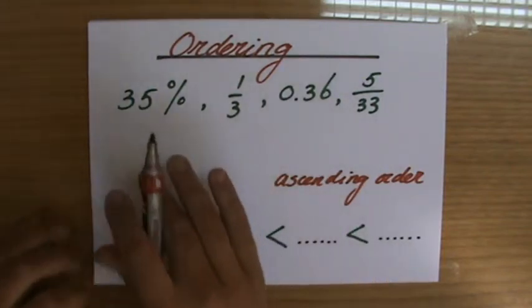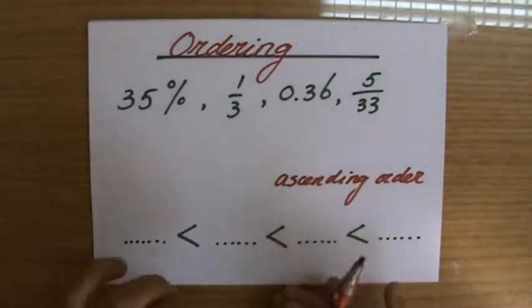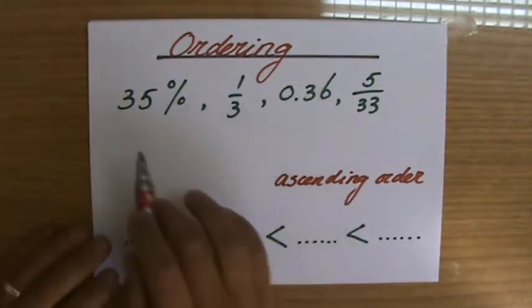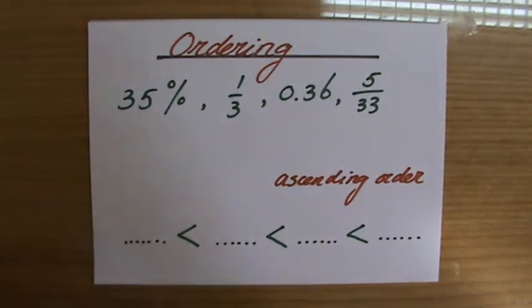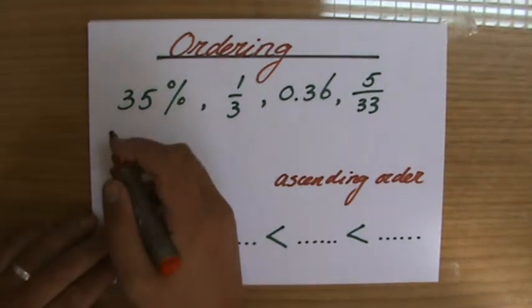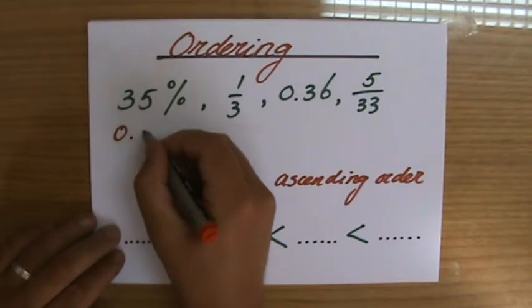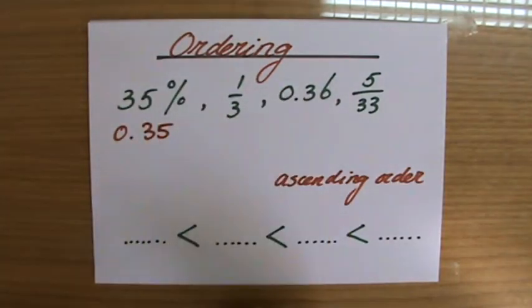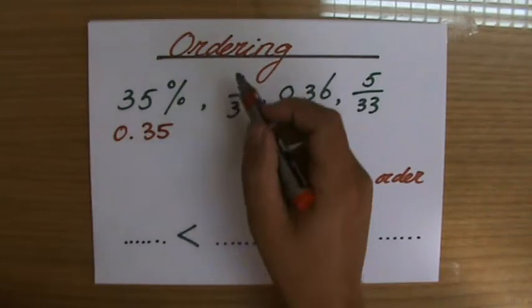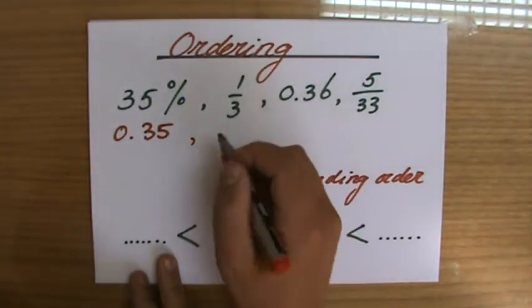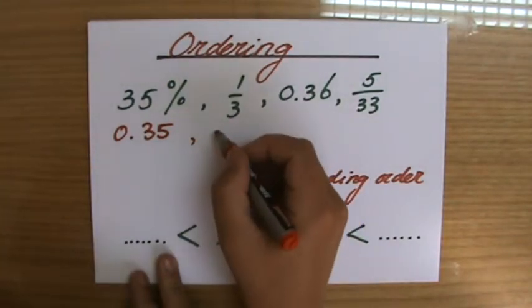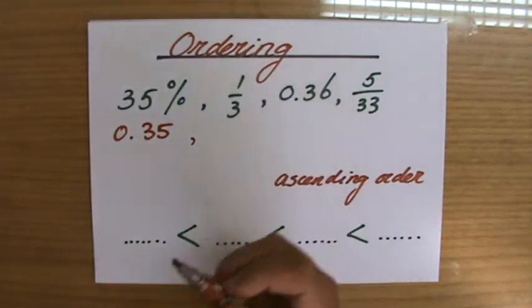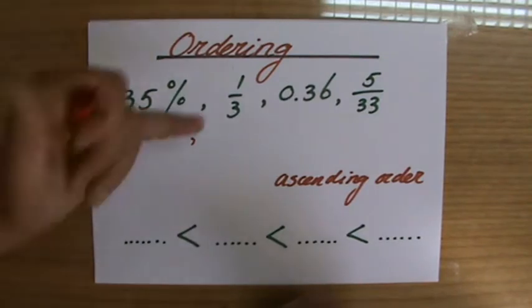Let's write them all as decimals. 35 percent — that's 35 out of 100 — so that is 0.35. Then 1 over 3 as a decimal: you can check it in your calculator if you don't know. 1 divided by 3...